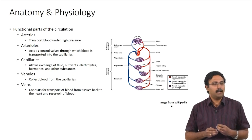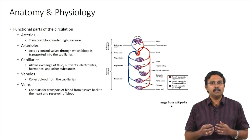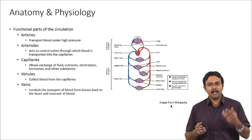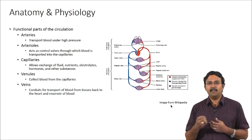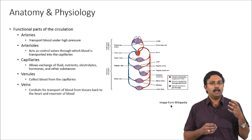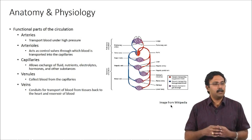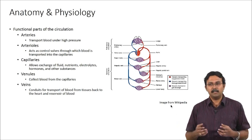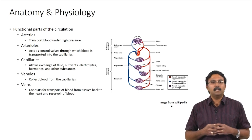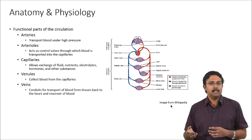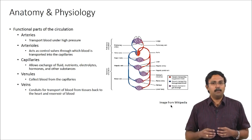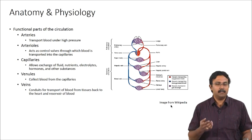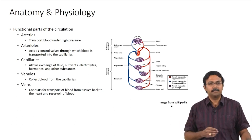Arteries transport blood at very high pressure. Arterioles act as control valves through which blood is transported to the capillaries, because with that high pressure blood cannot directly enter capillaries, which have very thin walls. Capillaries ensure exchange of fluid, nutrients, electrolytes, hormones, and other substances. Venules collect blood from capillaries, and veins are conduits transporting blood from tissues back to the heart.